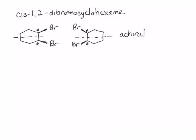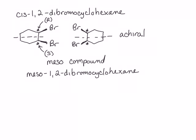Hopefully you've determined that the top stereocenter is R and the bottom is S. This is an example of a compound that contains chiral centers but is not chiral itself — in other words, this is a meso compound. We name the meso compound by calling it meso-1,2-dibromocyclohexane. Due to its internal mirror plane of symmetry, a meso compound will always be RS or SR.